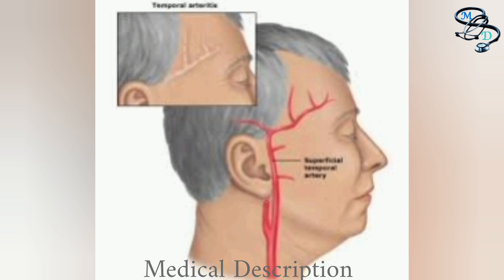Temporal arthritis is one of the most common vascular disorders, but it is a relatively rare condition, affecting about five out of ten thousand people. It usually occurs in people over 50 years old and affects women more often than men.